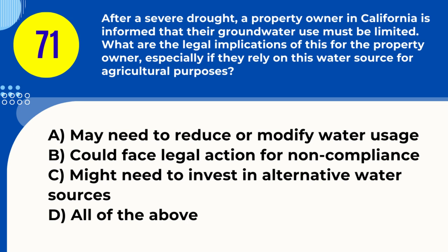Question 71. After a severe drought, a property owner in California is informed that their groundwater use must be limited. What are the legal implications, especially if they rely on this water source for agricultural purposes? A. May need to reduce or modify water usage B. Could face legal action for noncompliance C. Might need to invest in alternative water sources D. All of the above. Answer: D. All of the above. Explanation: Groundwater limitations can require usage adjustments, legal compliance, and possibly investing in alternative sources.